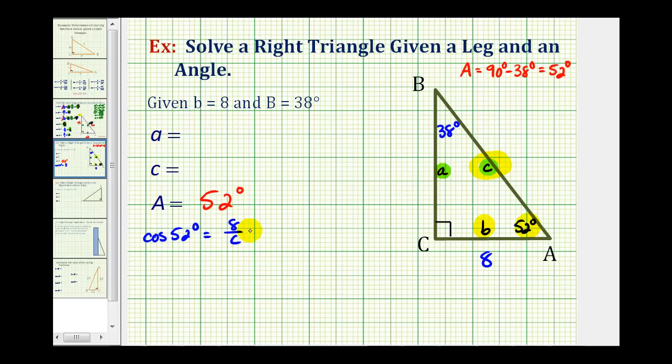Now to clear this fraction, we'll multiply both sides by C. This would simplify out. So we have C times cosine 52 degrees must equal eight.